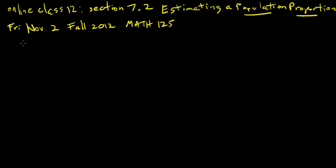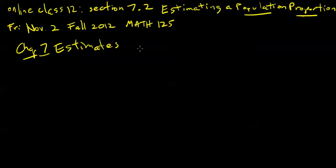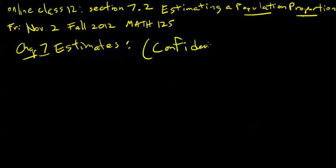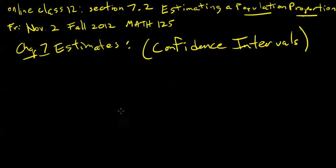We're starting a new chapter today, and the title of chapter 7 is entitled Estimates and Sample Sizes. I'm just going to call it Estimates, and really, if I was to write my own statistics textbook, you could easily call this chapter Confidence Intervals, because that's what we're going to be constructing. All through this section are confidence interval estimates of various parameters and statistics of interest.